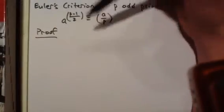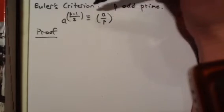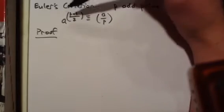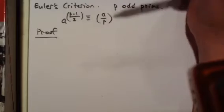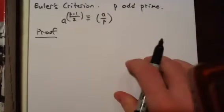Basically what this says is if A to the P minus 1 over 2 is 1, then A is a quadratic residue mod P, and if A to the P minus 1 over 2 is negative 1, A is a non-residue mod P.